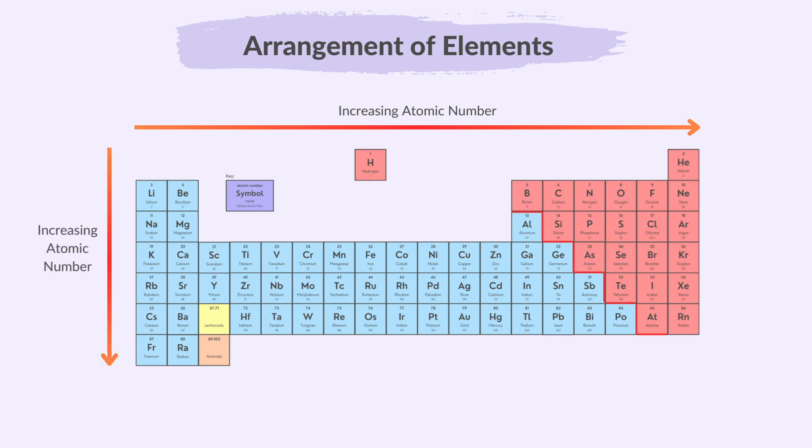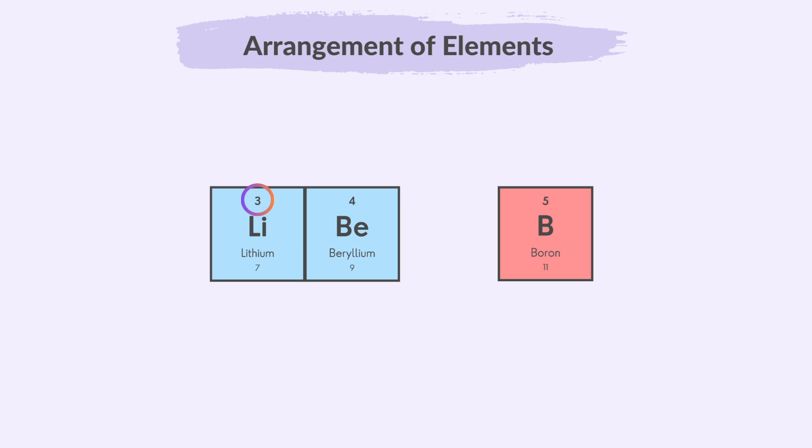For example, lithium has 3 protons, beryllium has 4, boron has 5, and so on. The proton number is the smaller number near each symbol.